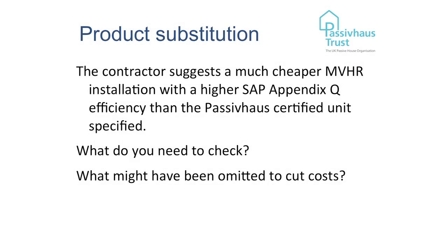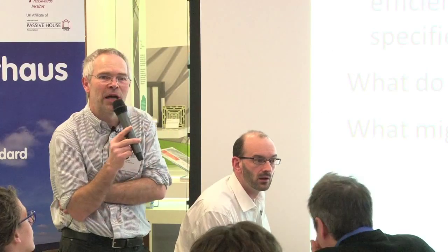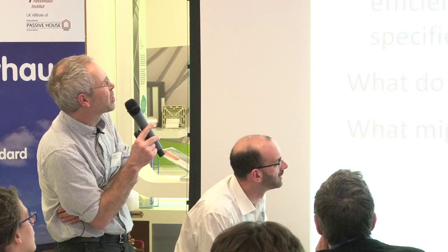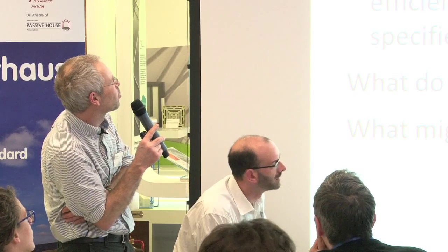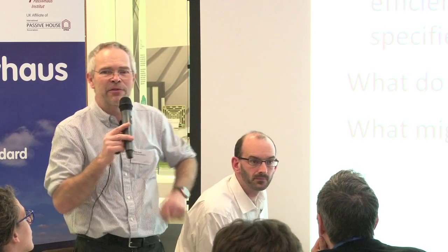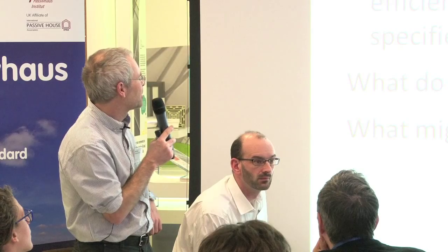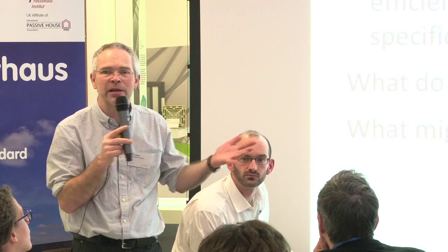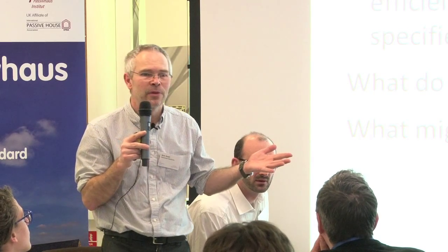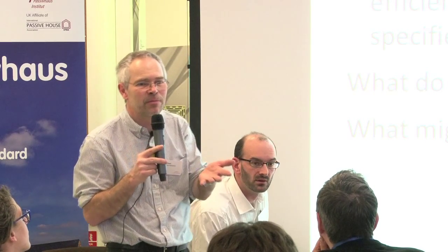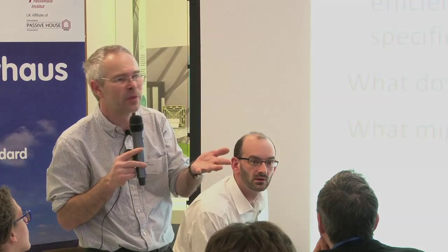The contractor suggests a much cheaper MVHR unit with a higher efficiency than the passive house one you specified. So what do you need to check? It's a whole system they've offered — a much cheaper system installed. What might they have chopped out? There are two things to check: efficiency and fan power — and also noise.